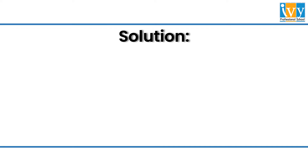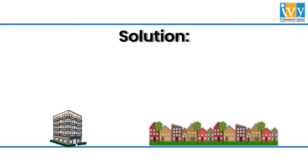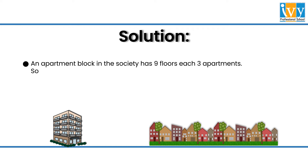Let's now move to the solution part. We need to make a few calculations to understand how many members are living in the housing society. In an apartment block there are 3 apartments with 9 floors each, giving us 27 floors. Multiplying that by 30 blocks gives us around 810 flats.